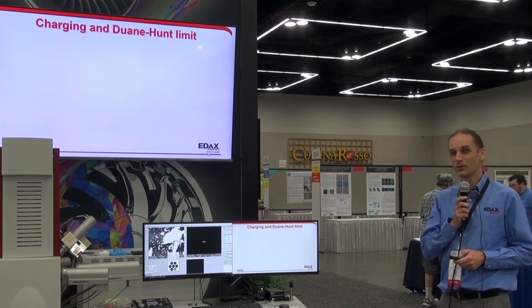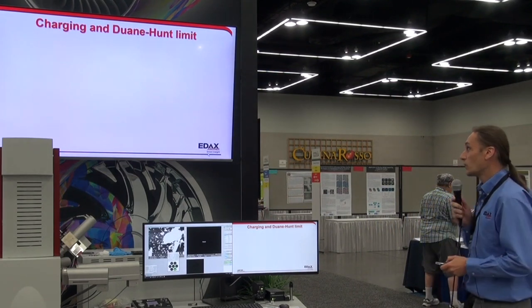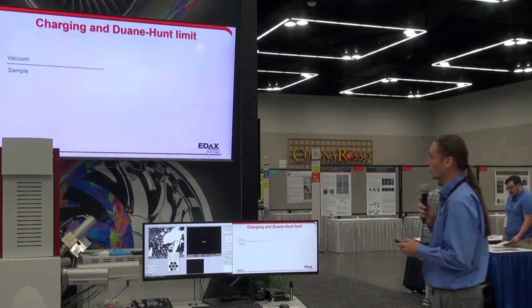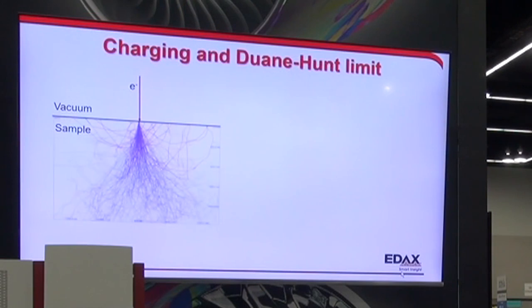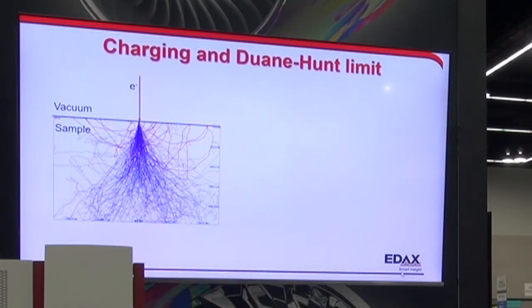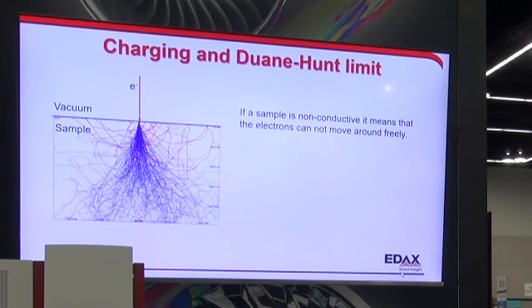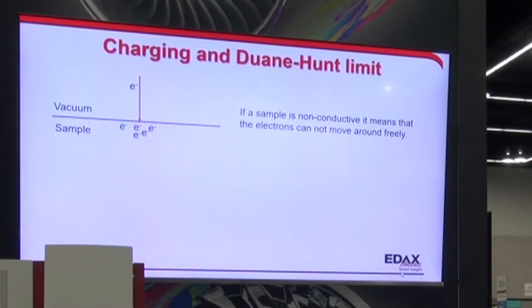However, the acceleration voltage and the cutoff don't always coincide. If we have charging samples, what happens is we put electrons down into non-conductive samples. Normally the electrons would scatter around and drain out through the stage, but a non-conductive or charging sample means the electrons can't flow freely. Instead of draining out through the stage, we have a buildup of electrons on the sample.